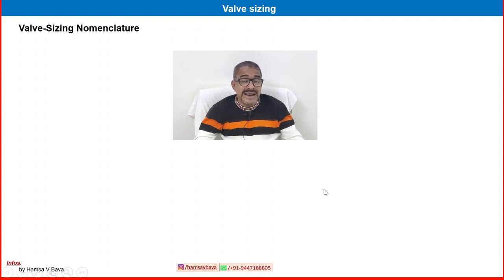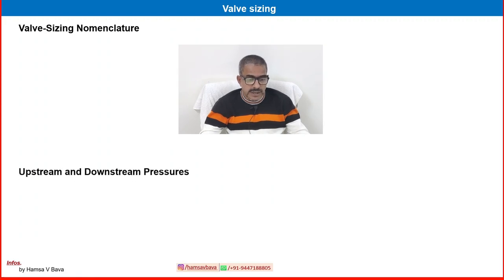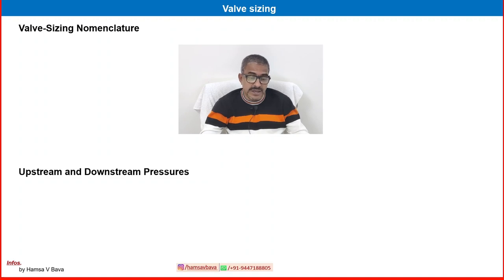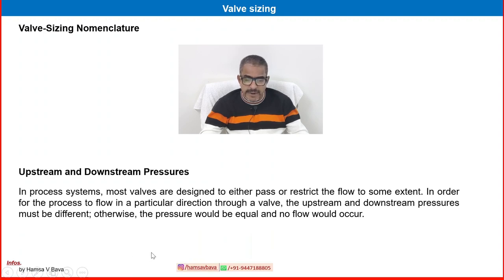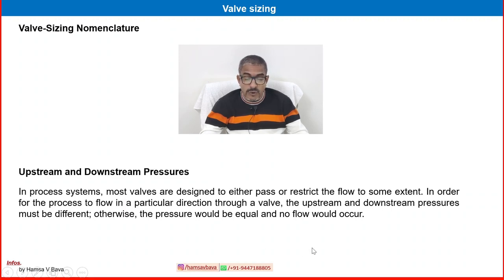This module covers general information on valve sizing — important factors and nomenclature — without covering all the equations in detail. Upstream and downstream pressure are key factors. In a process system, most valves are designed to either pass or restrict flow. For flow to occur in a particular direction through a valve, the upstream and downstream pressures must be different; if they are equal, no flow occurs. Upstream pressure is the pressure reading taken before the valve, while downstream pressure is taken after the valve.